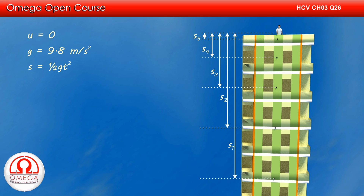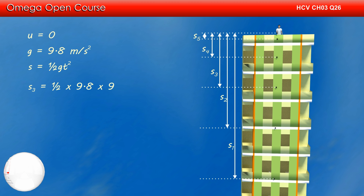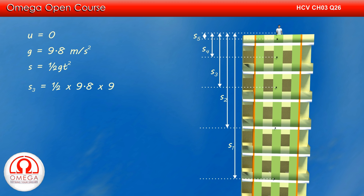Since initial speed is zero, from the second equation of Newton's equation of motion, we have s = ½gt². Putting t = 3, we get the displacement of the third ball, that is ½ × 9.8 × 9, or 44.1 meters.